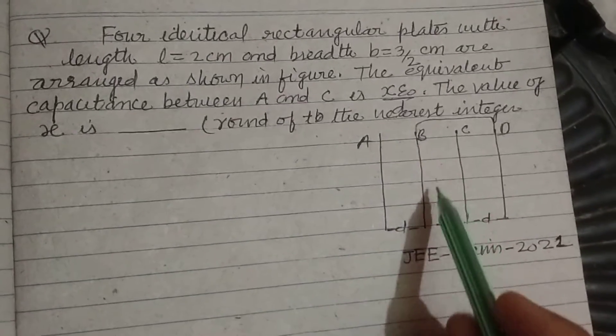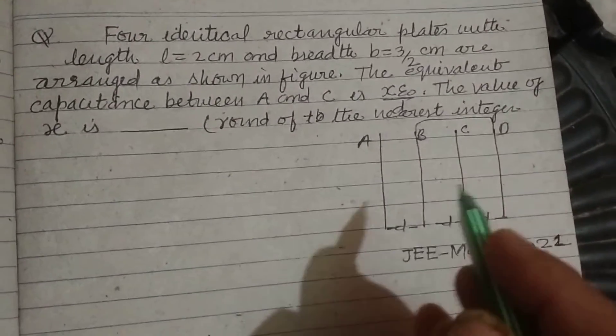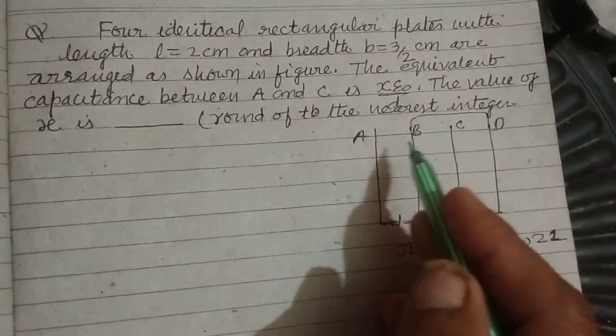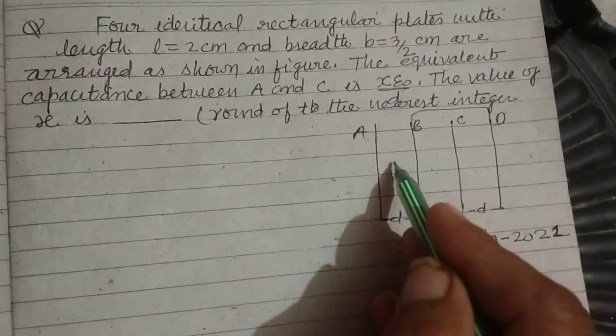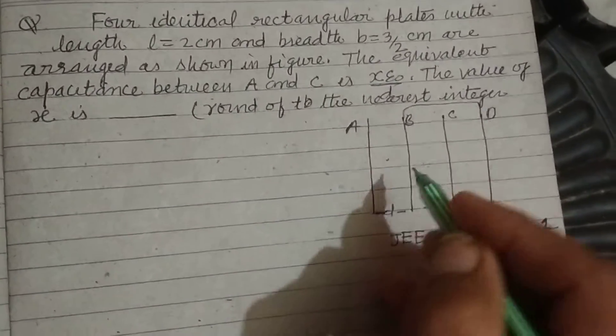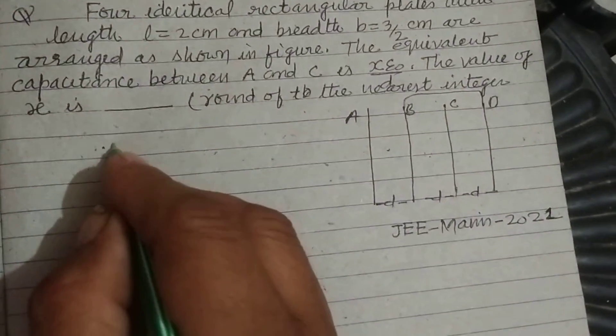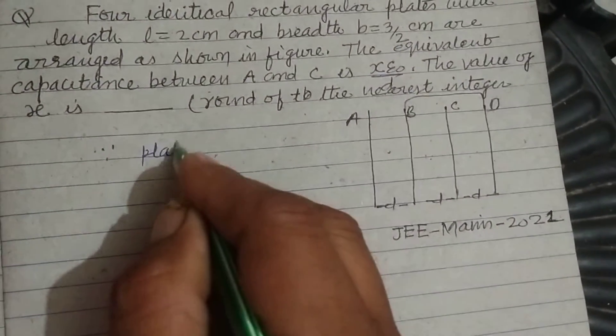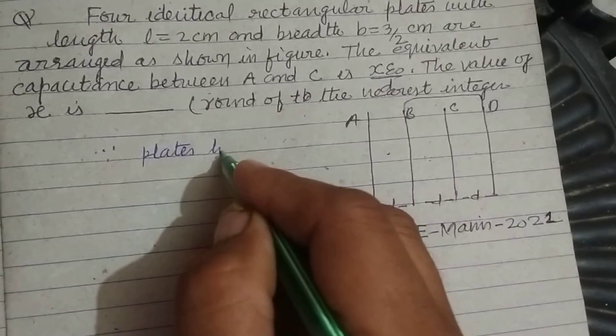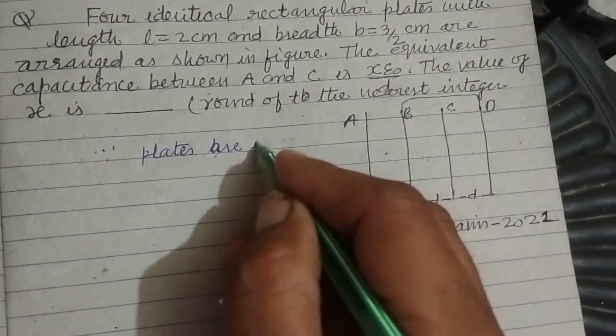So these are two parallel capacitors, this and this. Since they have same separation and same area, therefore these plates are identical.